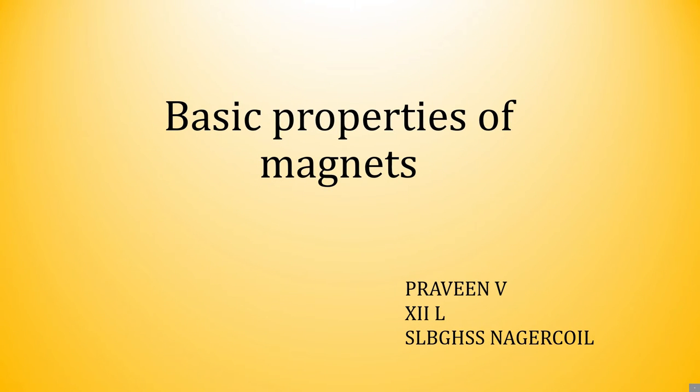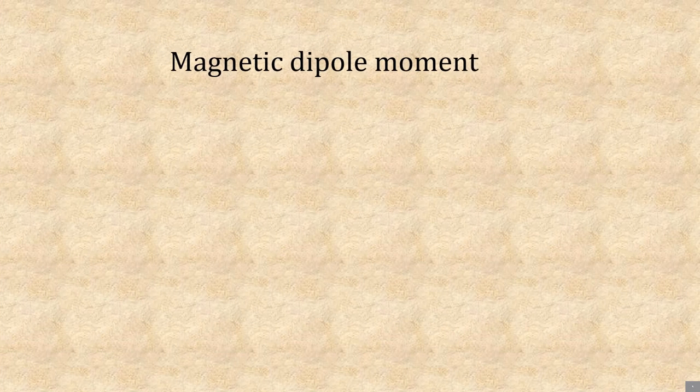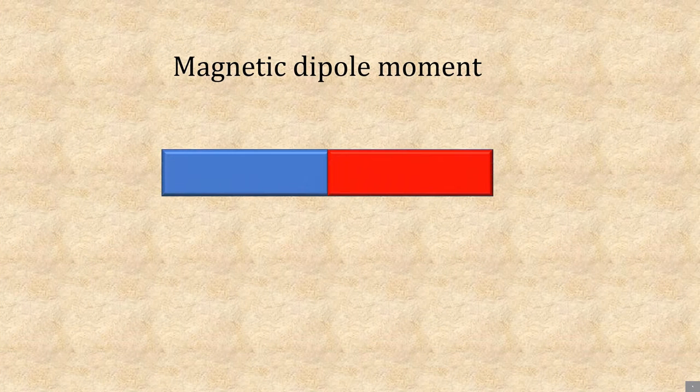Hello students, today we are going to see about basic properties of magnets from chapter 3. Let's see some basic terminologies and properties used in describing bar magnets. First, we are going to see about magnetic dipole moment.